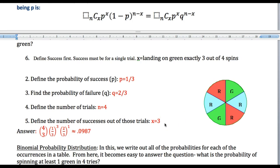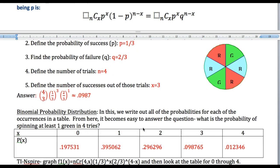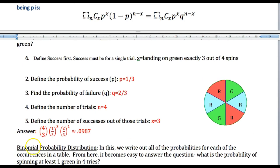But I want to know what's the success if I have zero successes out of four, one success out of four, two successes out of four, and so on all the way up to four. So that's how we get this binomial probability distribution.